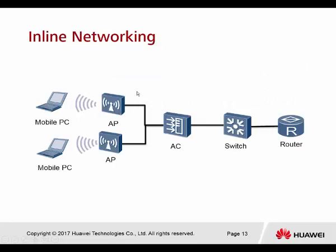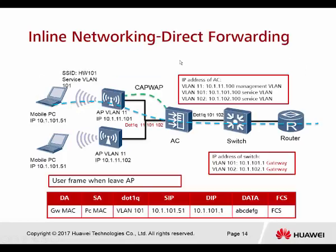This first example is inline networking with direct forwarding. After the CAPWAP tunnel is already established — the green colored line is the CAPWAP tunnel — when the user wants to go to the network, they pass through the AP, then go directly through the AC, through the switch, and reach the gateway router. The user frame leaves the AP, and from packet capture you can see the destination address is the gateway address and the source is the PC address.